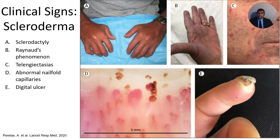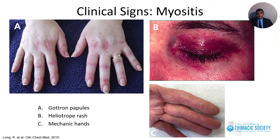Clinical signs commonly seen with scleroderma include sclerodactyly, Raynaud's phenomenon, telangiectasias, abnormal nail fold capillaries, and digital ulcers. Clinical signs commonly seen with myositis include Gottron's papules, heliotrope rash — an erythematous rash around the eyelids — and mechanics hands, which refers to digital fissures.